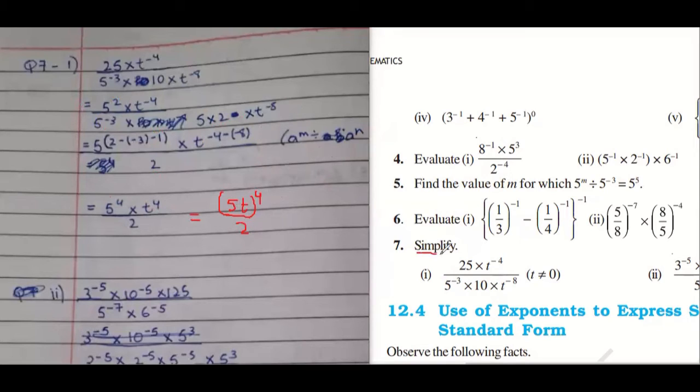5t to the power of 4 upon 2. But the question was simplify. 5 power 4, if you can solve, that would be great. That would be 625 t power 4 upon 2. Okay, but this is also correct.